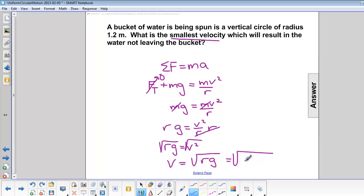So that's the square root of 1.2 meters times 9.8 meters per second squared, and that is equal to 3.4 meters per second.